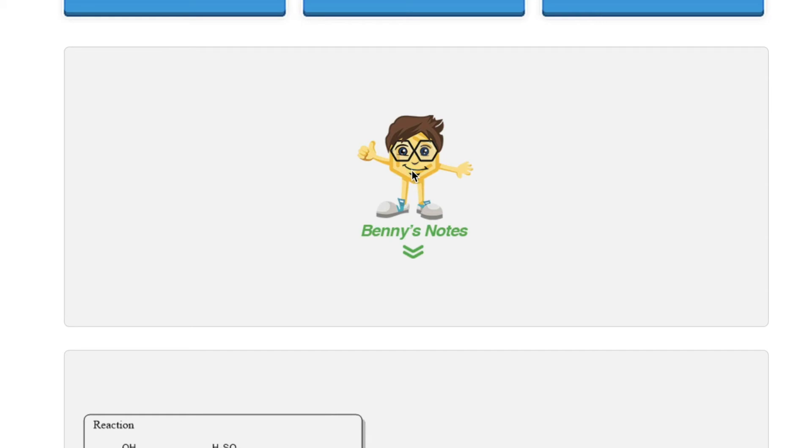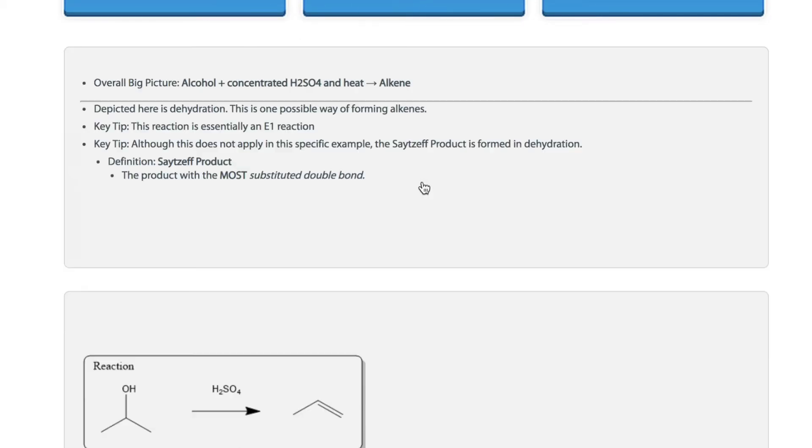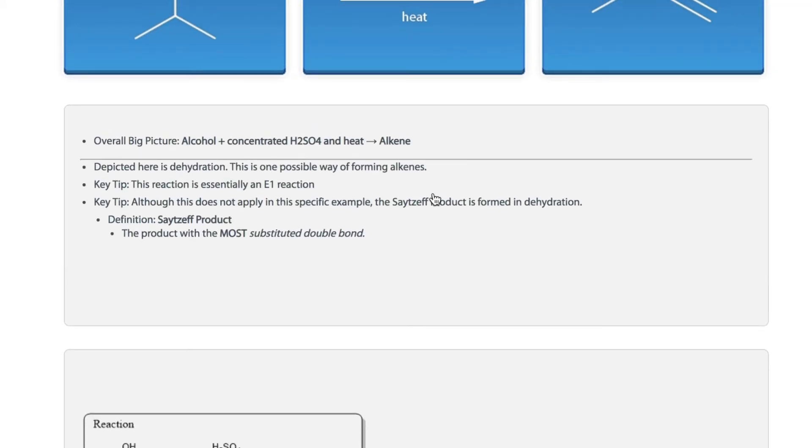We here at StudyOrgo like to give you the tips and tricks to help you prepare for getting the mechanism right on your exam. Remember that the overall big picture of the reaction is a dehydration reaction of an alcohol using acid and heat to form a carbon-carbon double bond and alkene product.